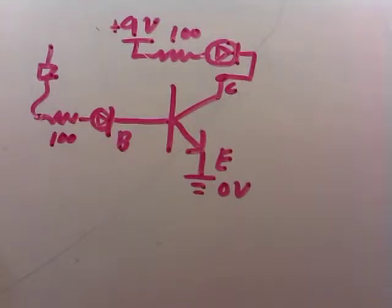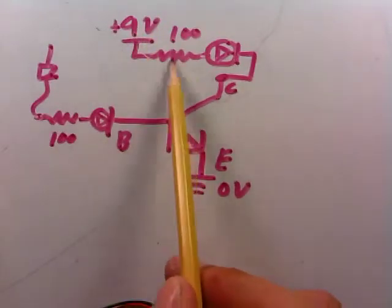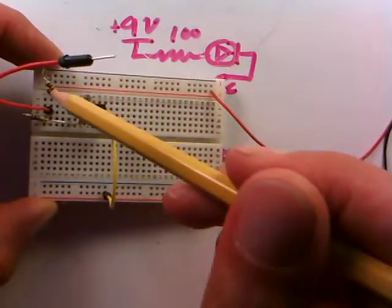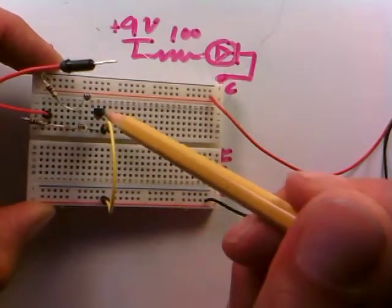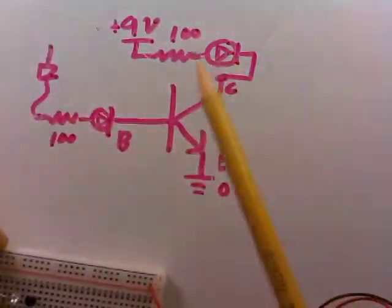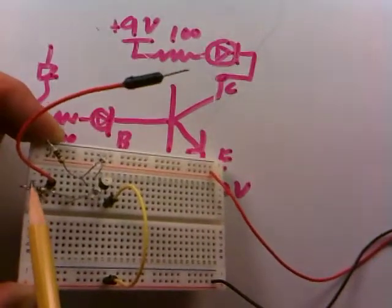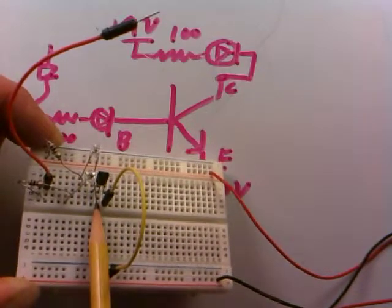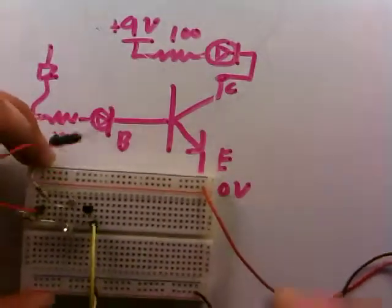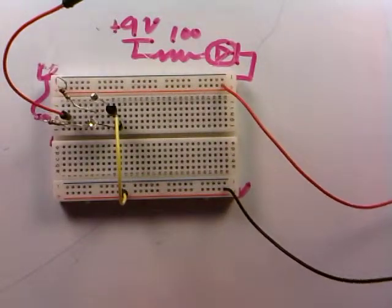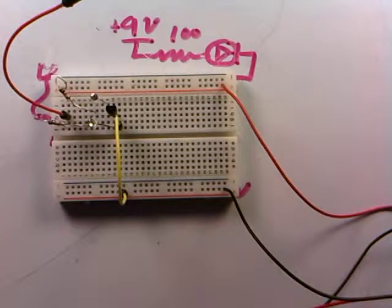In a nutshell: 9 volts → 100 ohm → LED → collector, emitter grounded via the yellow wire, and a second 100 ohm and LED feeding the base. The free probe wire lets us inject 9 volts to turn the transistor on or connect to ground to turn it off. Because the video is getting a bit long, we'll pause here and turn this on in the very next video.